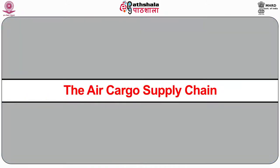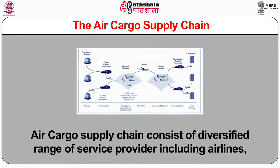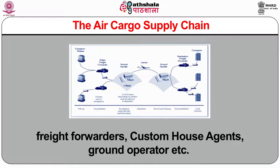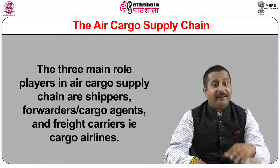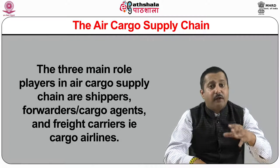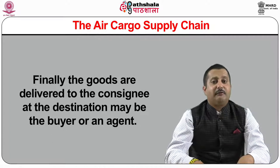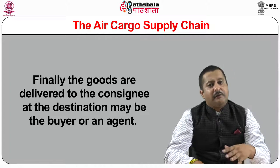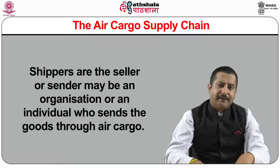Now I will discuss the air cargo supply chain. It consists of a diversified range of service providers including airlines, freight forwarders, custom house agents, and ground operators, working as a team for efficient transport and speedy delivery of freight from one place to another. The three main role players are shippers, forwarders or cargo agents, and freight carriers or cargo airlines. Finally, goods are delivered to the consignee at the destination. Shippers are the seller or sender — an organization or individual — who sends goods through air cargo.